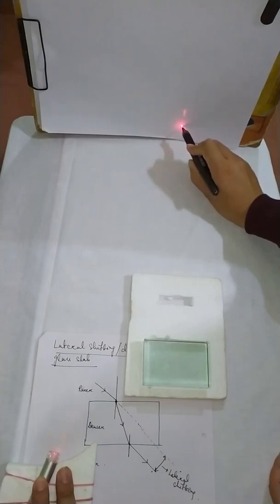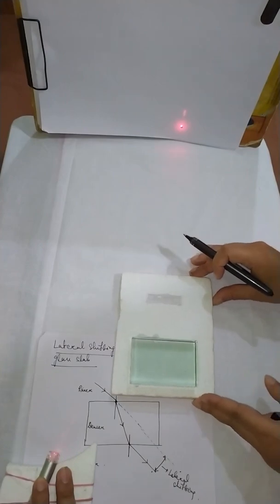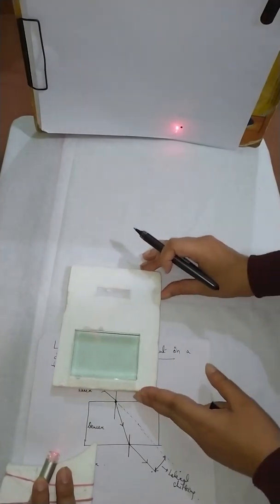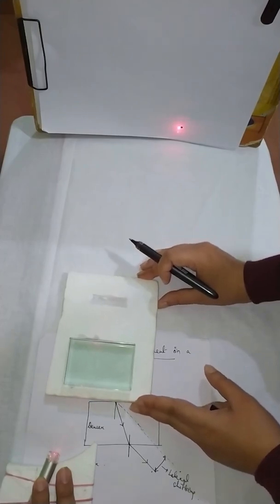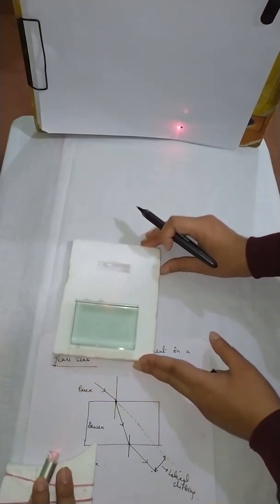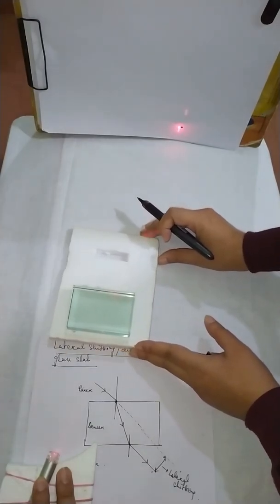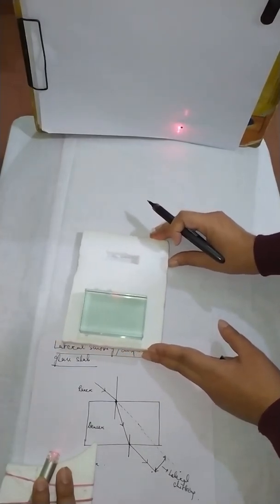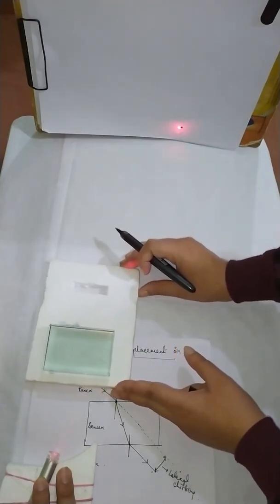You can see this point - I am just marking over here with a black color. I am taking this in front, now you see the variation. You can see it very easily. If there will be a change between the source and the glass slab, the distance between them, then there will be no change in the lateral shifting.